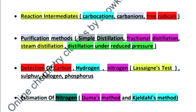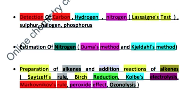Similarly detection of carbon and hydrogen, how to detect nitrogen by Lassaigne's test, sulfur and halogen will also be very important. Similarly detection of phosphorus. Estimation of nitrogen by Dumas and Kjeldahl's method will be very important.